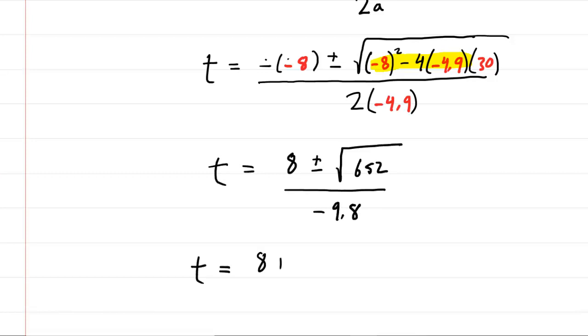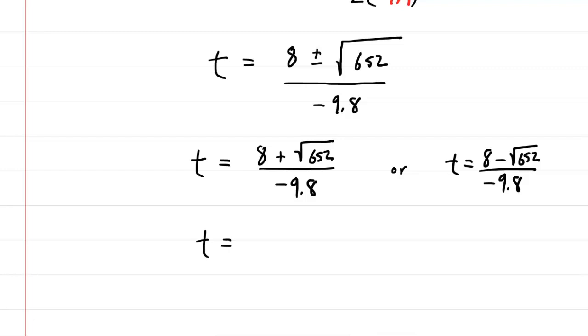And then basically you have to split this into two separate answers. You're going to get t equals 8 plus the square root of 652, all divided by negative 9.8, or you'll get t equals 8 minus the square root of 652, divided by negative 9.8. If you work these out individually, the first one comes out to be negative 3.42 seconds. The second one turns out to be positive 1.79 seconds. And then you ask yourself, which value of time makes the most physical sense here? Of course, it would be the positive time. In general, in these physics questions, negative time will have no meaning. So we can reject that answer and report the final answer to be 1.79 seconds.